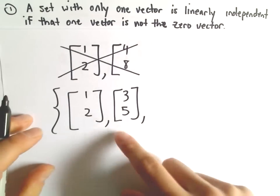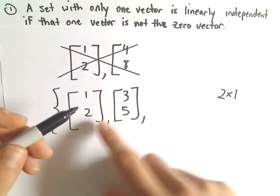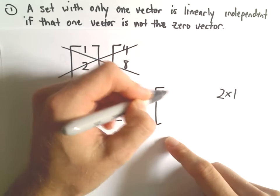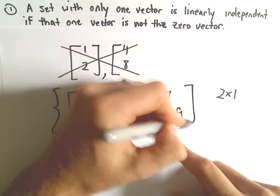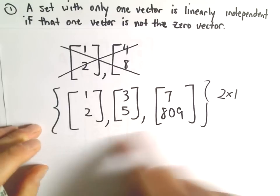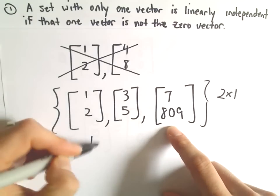But if I throw in any third vector, these vectors are no longer linearly independent. They are definitely linearly dependent.